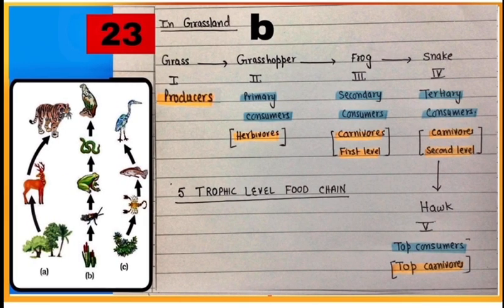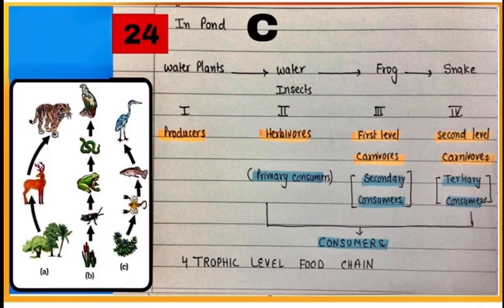23 is 5 trophic level food chain in a grassland. And 24 is 4 trophic level food chain in pond ecosystem.